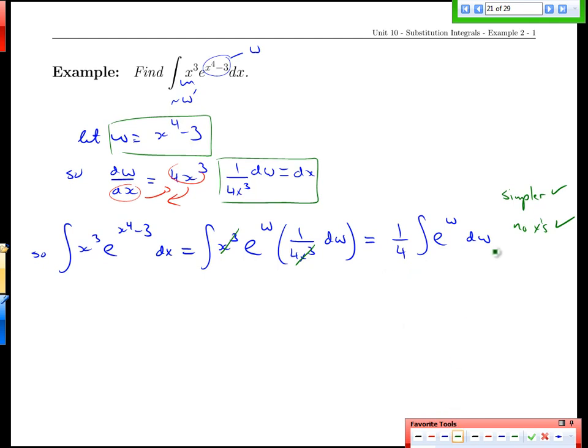Might as well do it right here. We're going to integrate now, and we'll get 1 quarter, well this is the easy one. What do I differentiate to get e to the w? e to the w, if that's my variable, plus a constant.